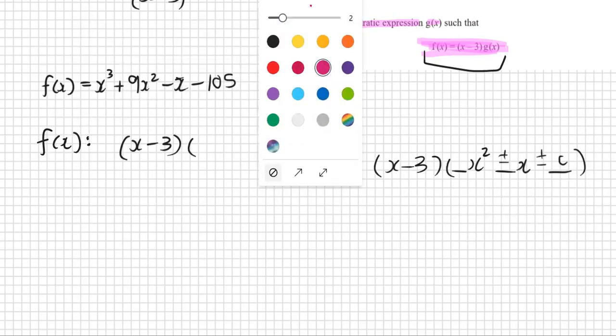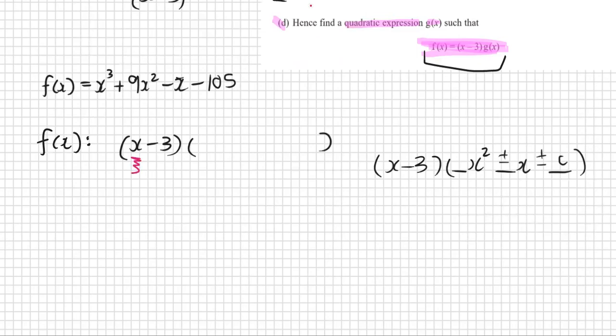So first we ask ourselves what times X will make X cubed? Well, X squared, X squared times X will make X cubed. So let's actually use the highlight tool there. And so that's the easy term. And then we ask ourselves what times negative three will make 105, the constant term in the cubic graph. Well, it's positive, positive 35 because positive times negative, so 35 will make the constant term.